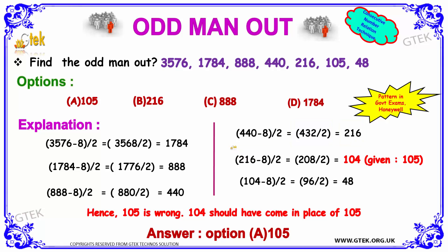I am applying the same logic: 216 minus 8 divided by 2, that's 208 divided by 2, that's 104, and the value given is 105. So 104 minus 8 divided by 2, you got 96 divided by 2, that's 48. So it's correct. So the odd one here is 104 should come and it's 105 here.